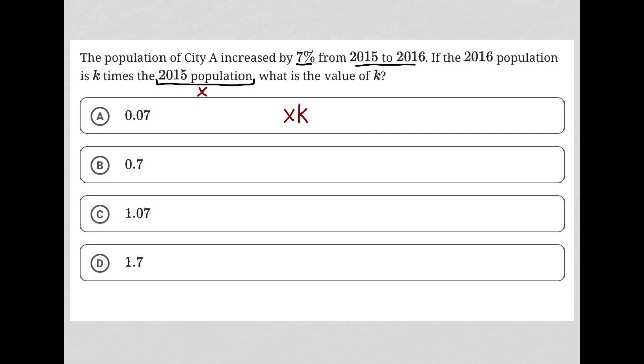So if the population is X in 2015, what is a 7% increase of X? That would be 1.07X. So X times K has to equal 1.07X.